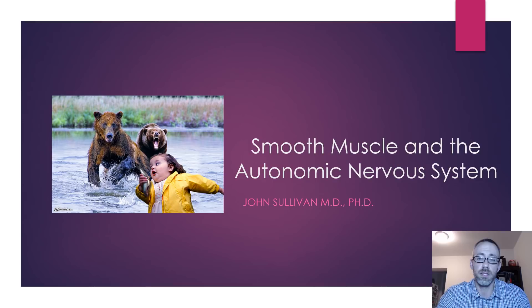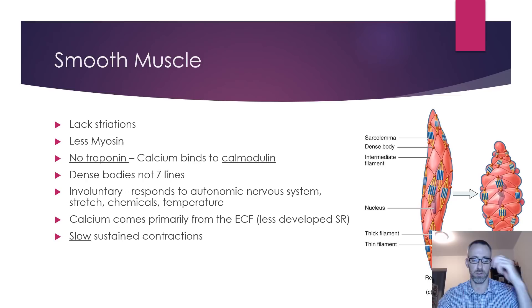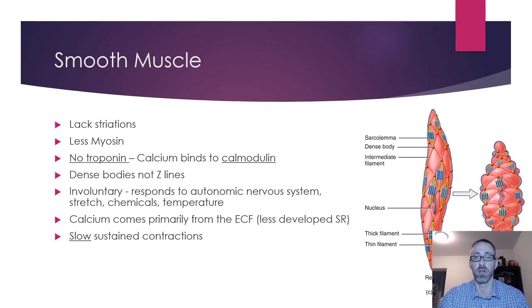Hello everyone and welcome to lecture 6, which is on smooth muscle and the autonomic nervous system. To begin, just to remind you that in the previous lecture we talked about skeletal muscle, and smooth muscle will have many similar characteristics — for instance, it is excitable, it does contract and relax.